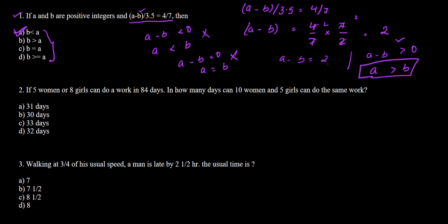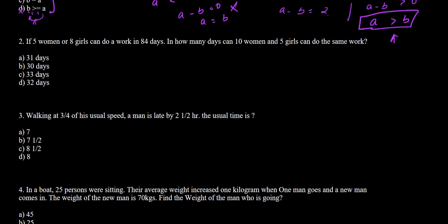We have got a minus b greater than 0, so a is greater than b. For the fourth option, it offers either a equal to b or a less than b, but our equation gives only one result, so option D is cancelled. Our answer is a is greater than b, which is option A. Moving on to question number 2.